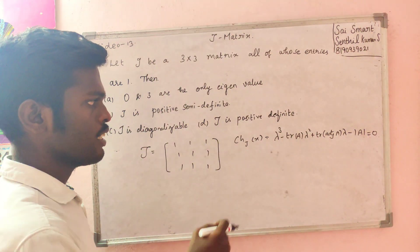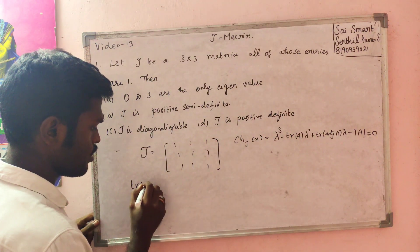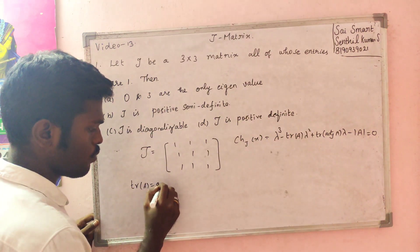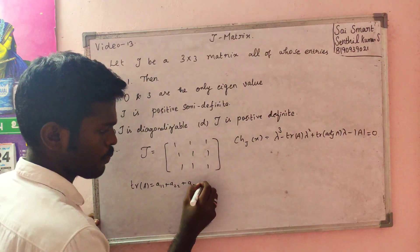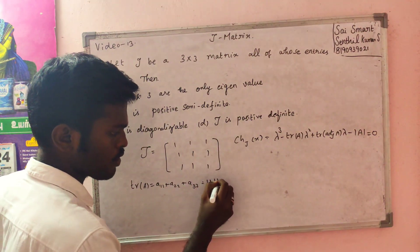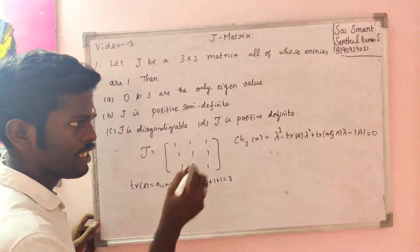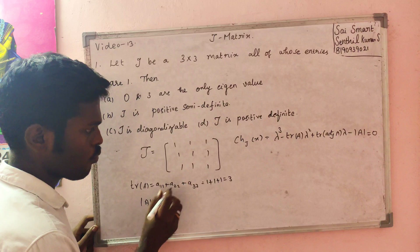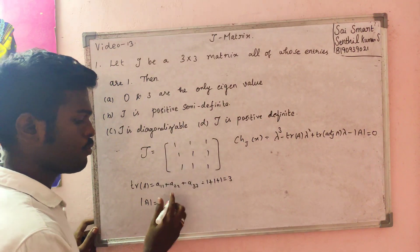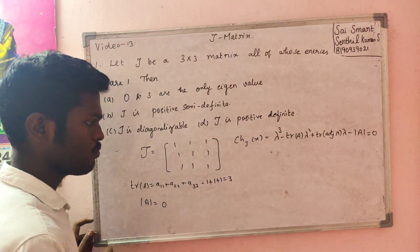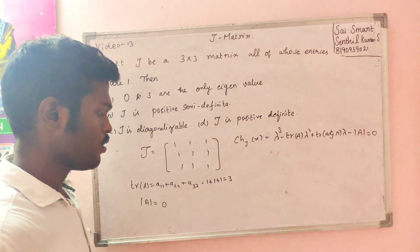Trace of A is easy: A11 plus A22 plus A33. 1 plus 1 plus 1 equals 3. So the trace equals 3, and the characteristic polynomial simplifies accordingly.